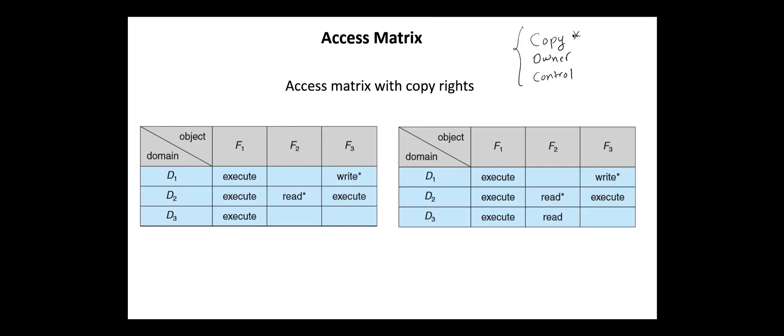For example, in this figure, a process executing in domain 2 can copy the read operation into any entry associated with file F2, as shown here.